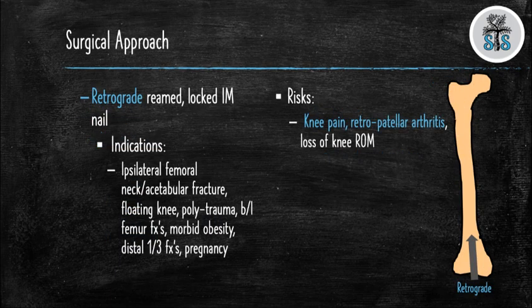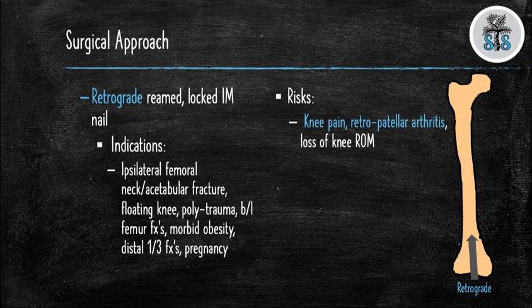Some indications for choosing a retrograde nail over an antegrade nail include: ipsilateral femoral neck or acetabulum fracture, floating knee, polytrauma patients, bilateral femur fractures (allowing you to drape both legs simultaneously), morbid obesity, distal third femoral shaft fractures, or patients who are pregnant (limiting radiation to the mother's abdomen). Inherent risks of a retrograde nail include development of chronic knee pain, retropatellar arthritis, and loss of knee range of motion.